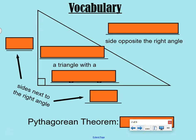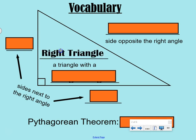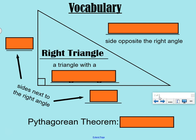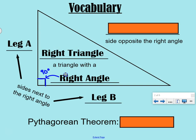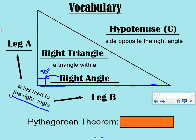Vocabulary. Right here we have pictured a right triangle. A right triangle is a triangle with a right angle. This little square in the corner tells you that it's a right angle, which is a 90-degree angle. The pieces of a right triangle are leg A and leg B — those are the sides next to the right angle, so they touch the right angle. Our third side is called the hypotenuse, which is side C, and that is across from the right angle, so it does not touch the right angle at all.